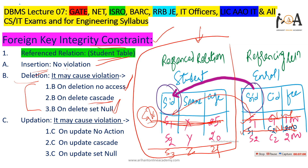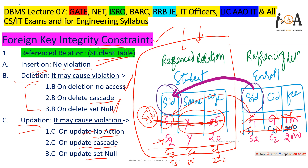Inserting more data like S4 into the student table creates no violation. So insertion in the referenced relation (student table) causes no violation. For updation: 'on update no action' may cause a violation if the student ID is changed without updating the referencing table. 'On update cascade' propagates the update, and 'on update set null' sets the foreign key to null in the referencing table when the referenced value is updated.